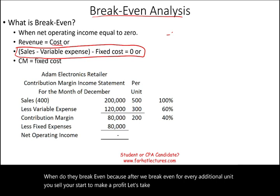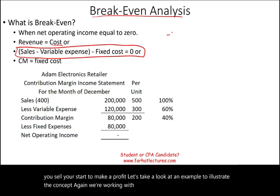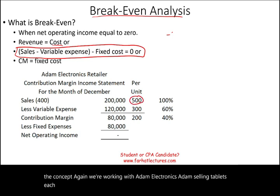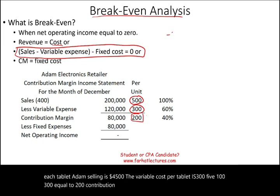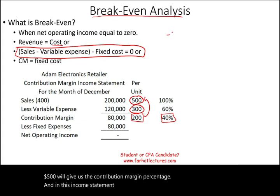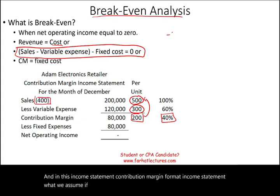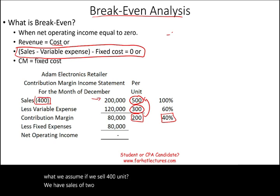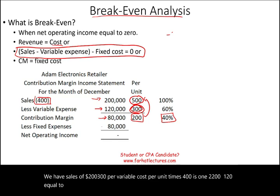Let's look at an example with Adam Electronics. Adam is selling tablets at $500 each. The variable cost per tablet is $300, so $500 minus $300 equals a $200 contribution margin per unit. The contribution margin percentage is $200 divided by $500, which is 40%. Assuming we sell 400 units, sales are $200,000; variable costs are $120,000; contribution margin is $80,000; minus $80,000 of fixed cost equals zero — break even.